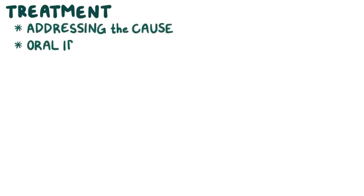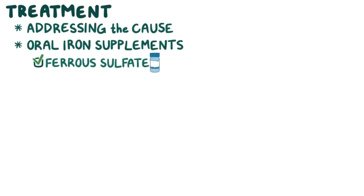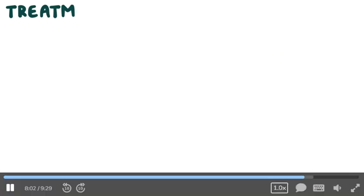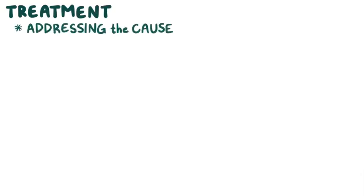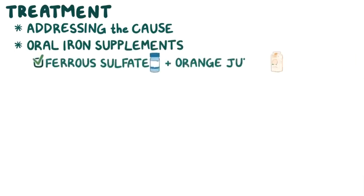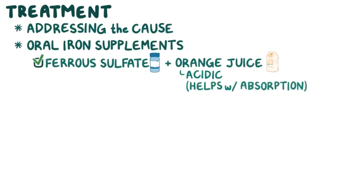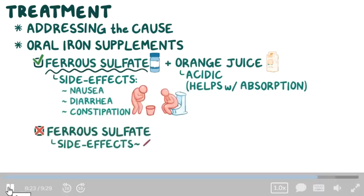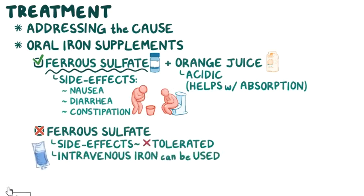Treatment for iron deficiency anemia includes addressing the cause and giving oral iron supplements, like ferrous sulfate. They can be taken with orange juice, which is slightly acidic and can help absorption. If oral iron isn't effective or the side effects can't be tolerated, intravenous iron can be used instead. Severe cases can also require a blood transfusion.